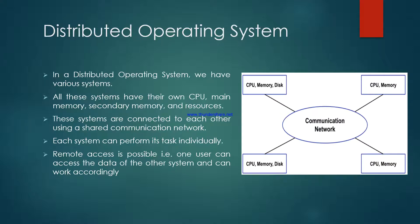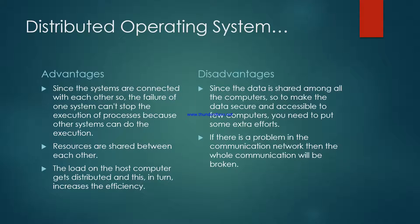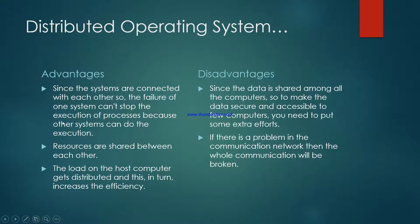This image shows the working of a distributed operating system. There are some advantages and disadvantages of distributed operating systems. The first advantage is that since the systems are connected with each other, the failure of one system cannot stop the execution of a process because another system can take over. So one system breakdown will not affect the whole process execution.